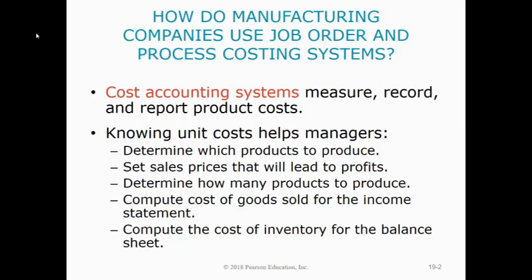Having that information helps managers in a ton of different ways. It lets them know which products are the most profitable, therefore they should produce those. It helps them set their sales prices to make sure there's a certain level of profit margin on each product that they sell. It determines how many products they should produce, helps them come up with a cost of goods sold when they budget for their income statement, and helps them figure out the cost of all three types of inventory — raw materials, WIP, and finished goods — for their budgeted balance sheet.